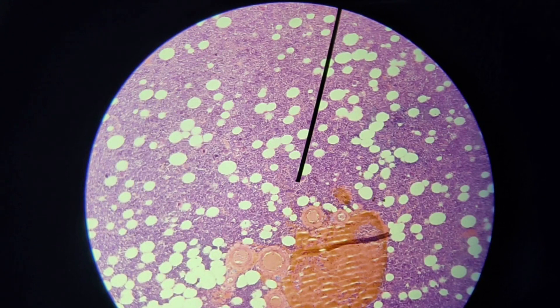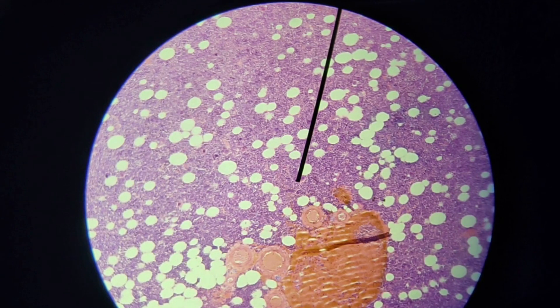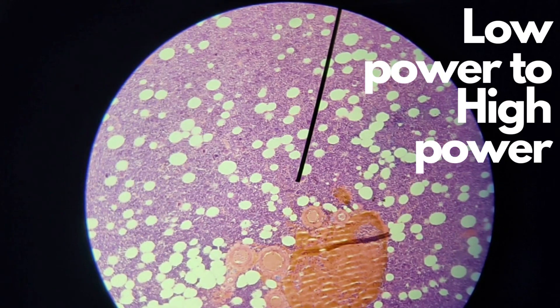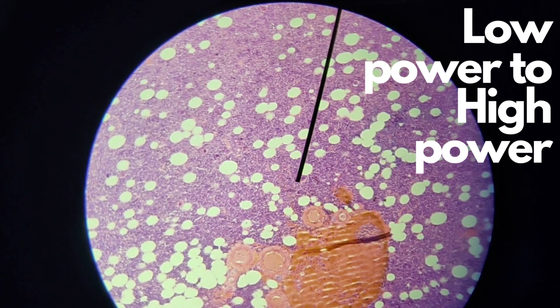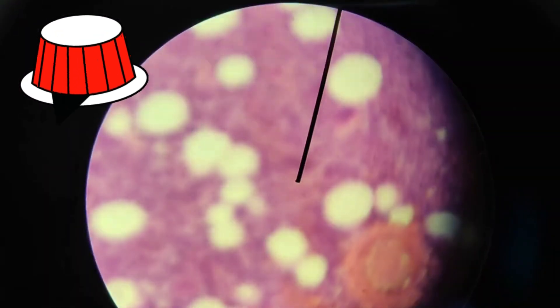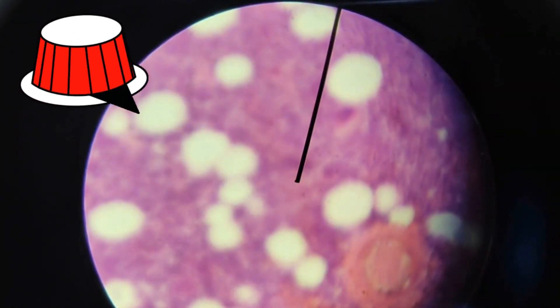I want to make the magnification higher, so I'm going to tilt the revolving nosepiece to change from low power to high power. It would look like that, but as you can see in the image,